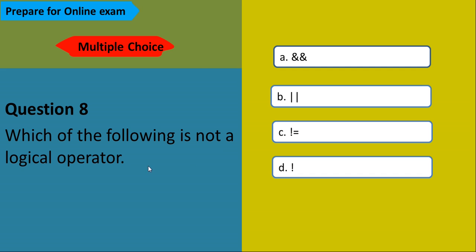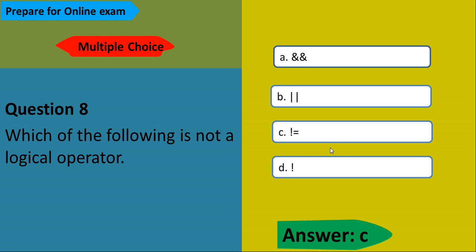Which of the following is not a logical operator? The options are AND, OR, NOT, and not-equal-to (!=). We know that logical operators are AND, OR, and NOT. So the answer is C — not-equal-to (!=).